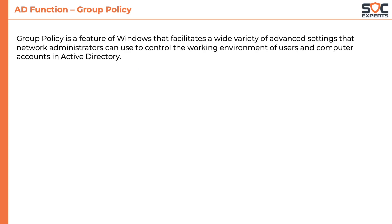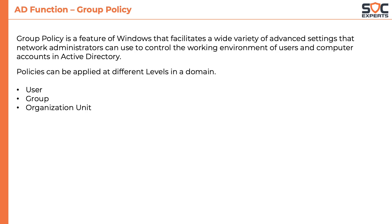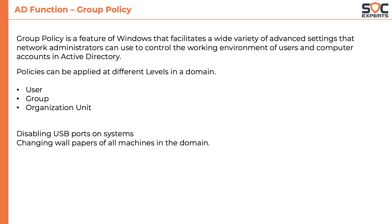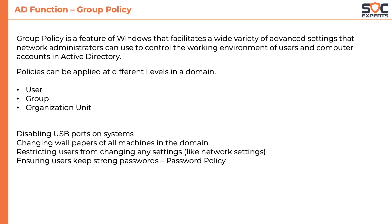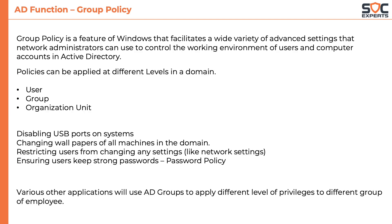Another useful function of Active Directory is group policy. Group policy is a feature of Windows that facilitates a wide variety of advanced settings that network administrators can use to control the working environment of users and computer accounts in Active Directory. Policies can be applied at different levels in a domain — at user level, at group level, or at the organizational unit level. Some examples of group policies include disabling USB ports on systems, changing wallpapers on all machines in the domain, restricting users from changing system settings, ensuring users keep strong passwords via password policy, etc. Various other applications will use AD groups to apply different levels of privileges to different groups of employees.